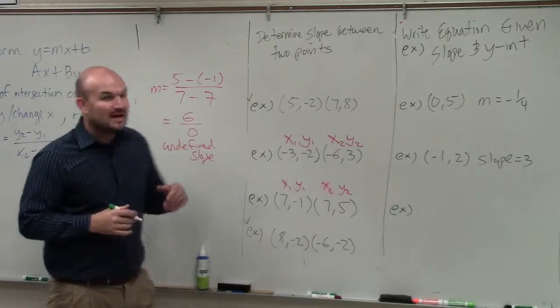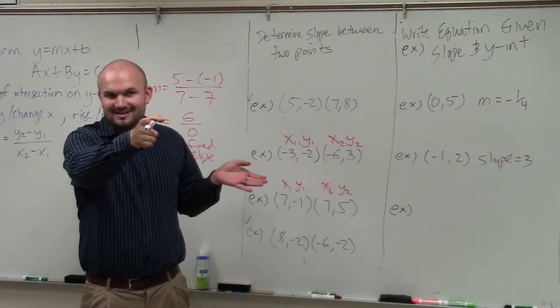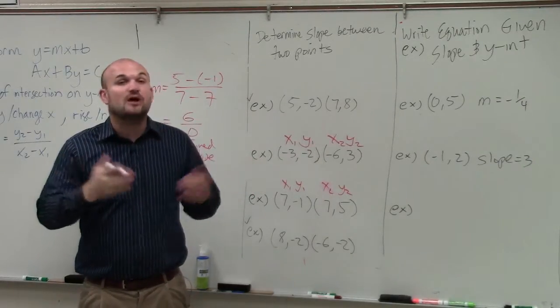Does anybody know what type of line? We can still have a linear equation. Does anybody know what type of line has an undefined slope? A line that goes straight up? Yes, which we call a vertical line.